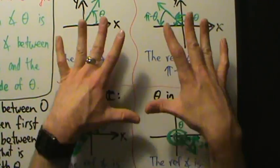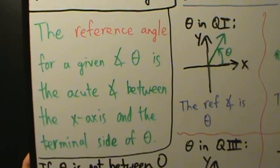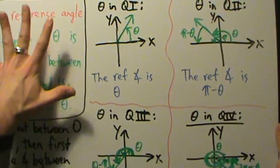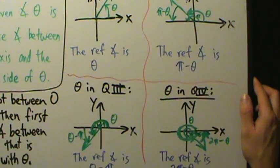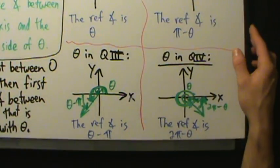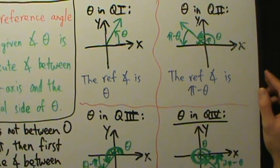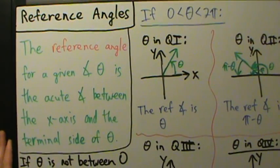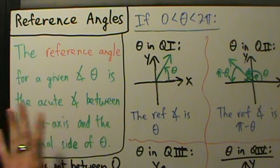I strongly recommend not memorizing the chart, but instead understanding how it was filled in from the definition: the reference angle is the acute angle between the x-axis and the terminal side of theta. Using that definition is much simpler than keeping straight which formula applies when. We'll stop here and do lots of examples — simple ones first, then more complicated ones — in the next video.